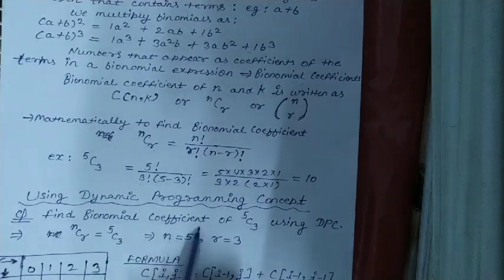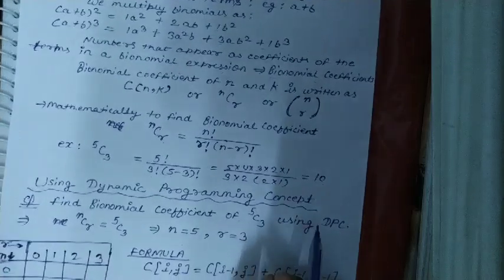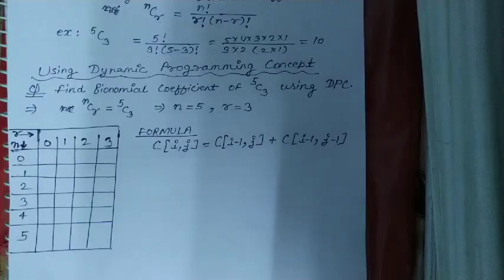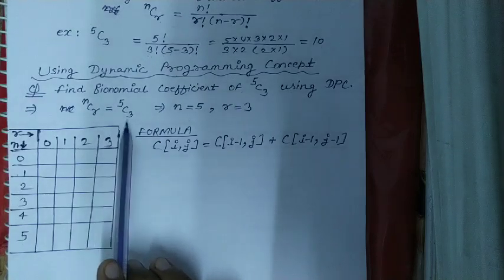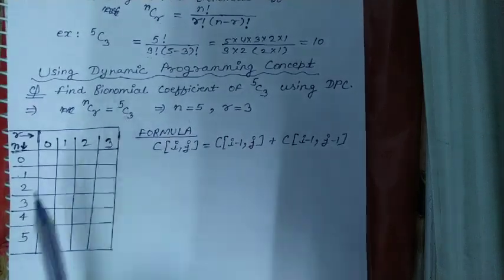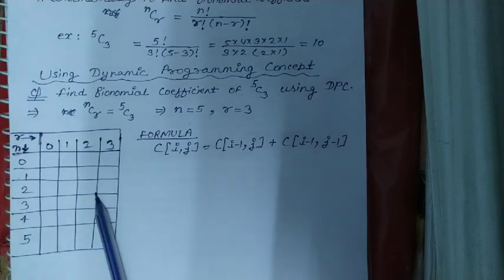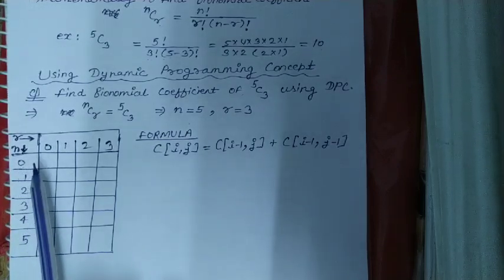Find binomial coefficient of 5C3 using dynamic programming concept. To compute this in exams, firstly you have to find the value of N and R. Here, N C R is compared with 5C3, so N will become 5 and R will become 3. Using dynamic programming concept, you have to use the recurrence formula and draw a table.